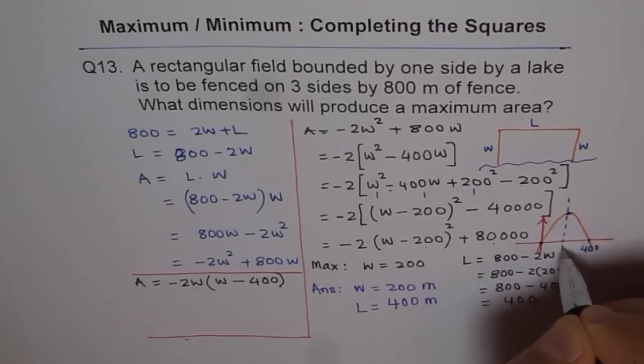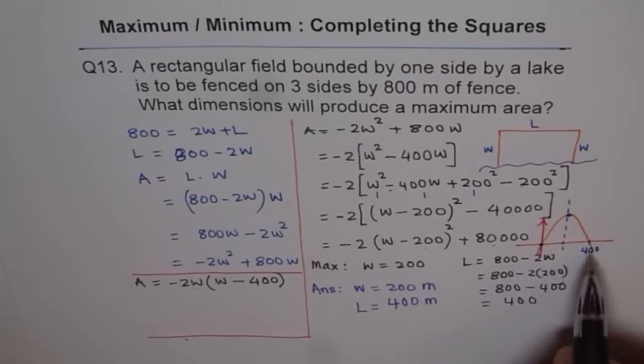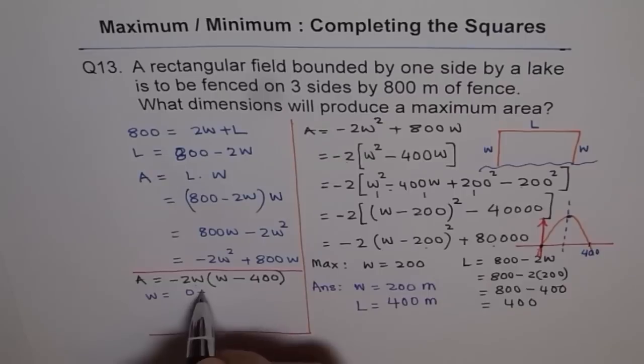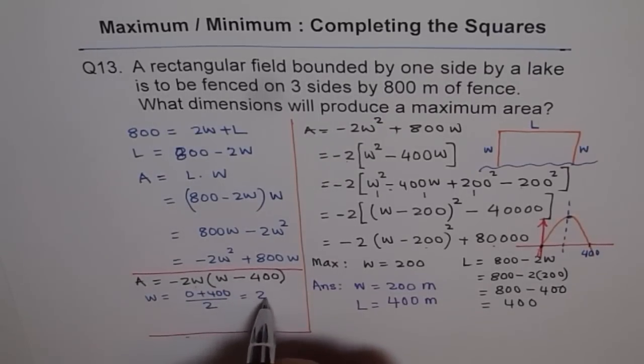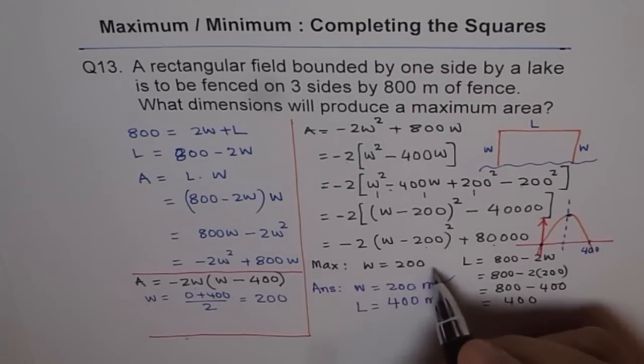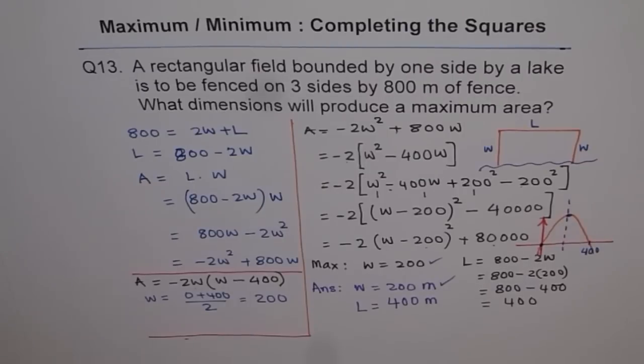0 and 400. So where should be the vertex? Axis of symmetry. And axis of symmetry will be right in the center. So width should be equals to 0 plus 400 divided by 2 and which is 200. So we get our answer 200. Or here, 200. By factoring.